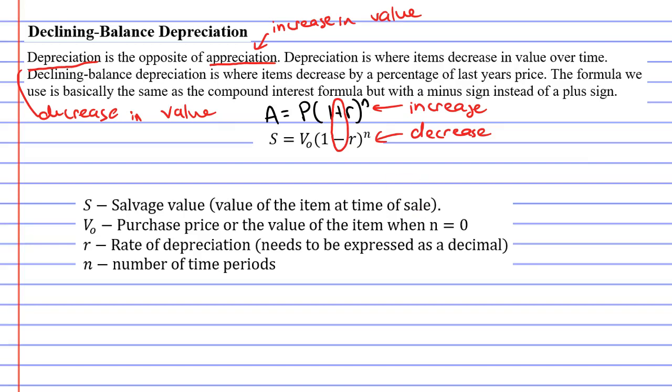The next thing we're going to talk about is this letter V with a subscript of the number zero. What does this represent? It actually represents the purchase price. So if you purchased a car for a certain amount, this would be what V with the subscript zero is all about. Now why do they do this? It seems a bit odd. Why do they not put P for purchase price? Well, the reason they do this is it's the value—V for value—of the item when n equals zero. This is where zero comes from.